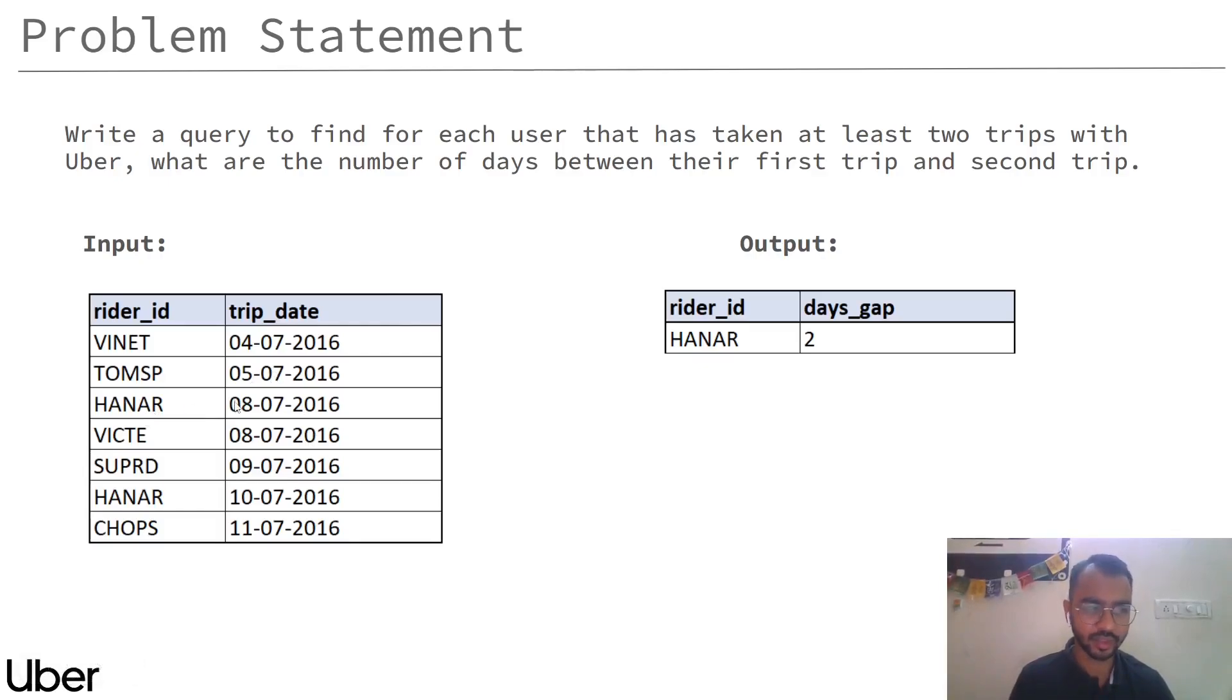Hanar has two trips, one is on 8th July, the second one is on 10th July. So the difference between the days is 2, which is our output. This is the input that we are looking at and here we have on the right hand side the output.